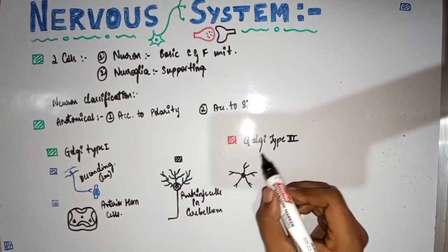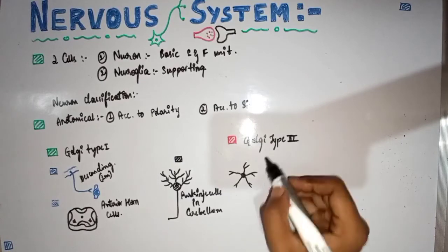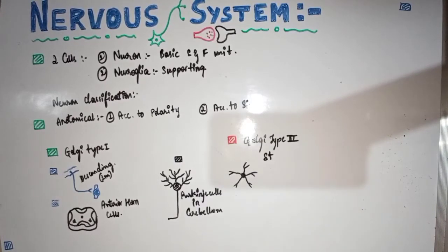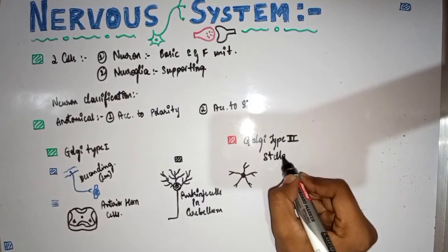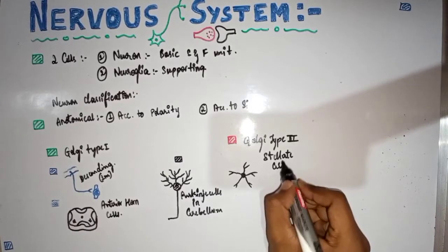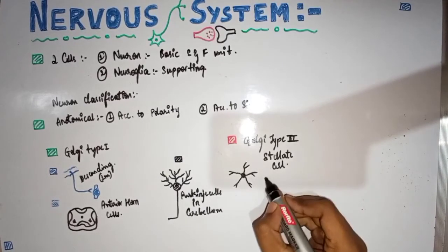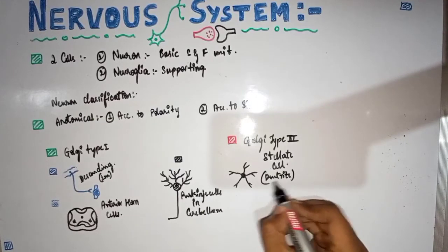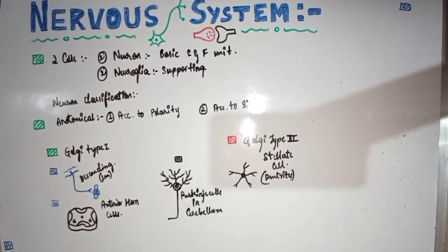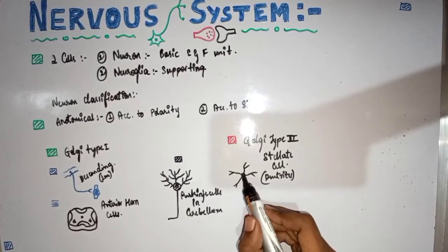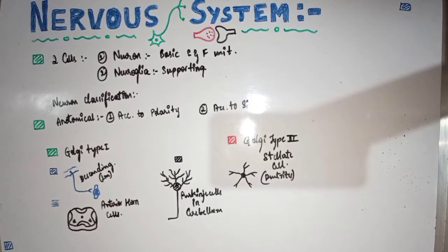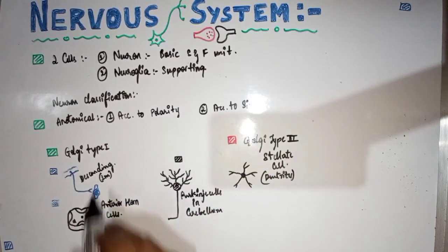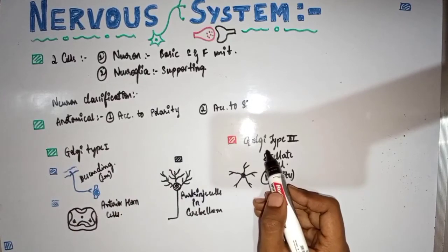An example of a Golgi type 2 cell is the stellate cell — a star-shaped cell with only dendritic processes, smaller in size. It functions as an inhibitory interneuron that connects the Purkinje cells in the molecular layer of the cerebellum. So Golgi type 1 are larger and Golgi type 2 are smaller.